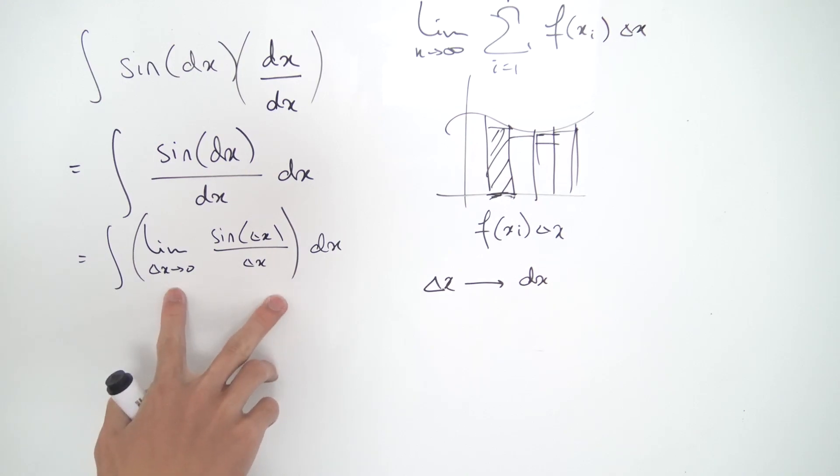And this is a well-known limit. This limit actually evaluates to one. There's a couple ways you can show this limit—you can use geometry or something like that. But let's suppose we know what this limit is, it's just one. So now we're integrating one times dx, but that's just integrating dx only.